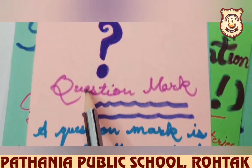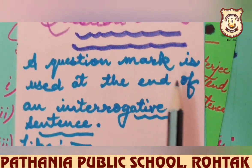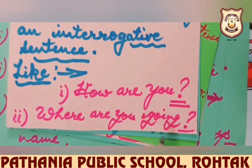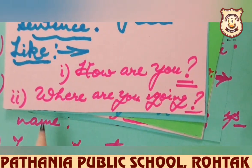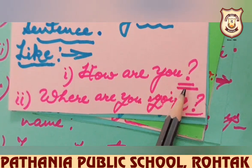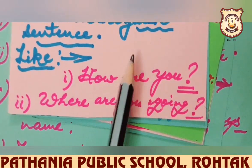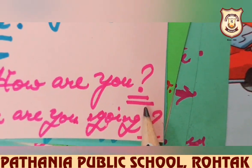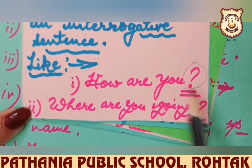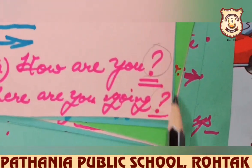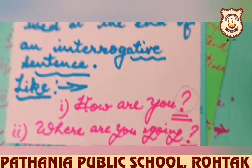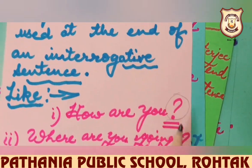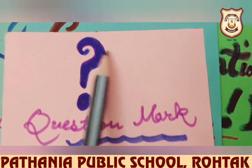Our next punctuation mark is question mark. A question mark is used at the end of an interrogative sentence. Wherever we have used question words and a question is asked, that is called an interrogative sentence. For example, 'How are you?' and 'Where are you going?' — we use a question mark at the end. This is the sign of question mark.